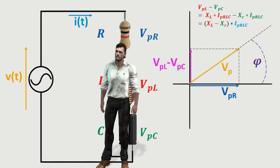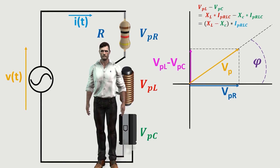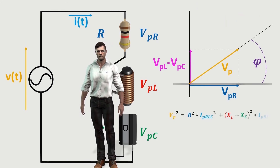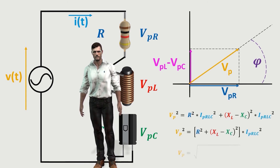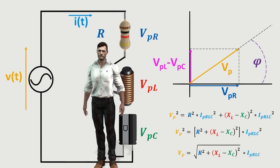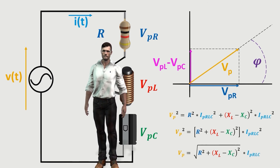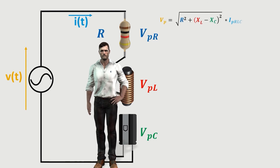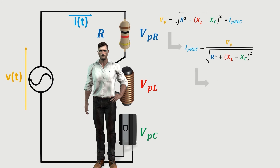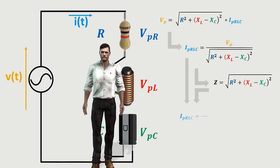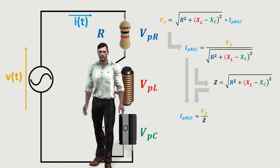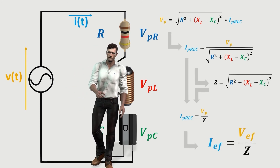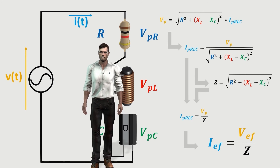The phasor diagram is thus simplified to two phasors forming a right triangle. To calculate the peak value of the resulting total voltage, we apply the Pythagorean theorem: the hypotenuse squared equals the sum of the squares of the other two sides. Grouping and taking the square root, we obtain the relationship between peak current and peak voltage. To simplify the expression further, we define a new parameter called impedance Z, which makes the expression look like Ohm's law — but with impedance instead of resistance. For sinusoidal waveforms, we can also obtain expressions relating the effective values of voltage and current through the impedance.